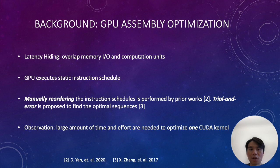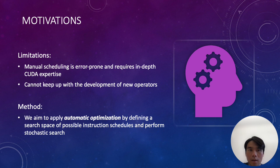We observed that large amounts of time and effort are needed to optimize a specific CUDA kernel's instruction schedule. The limitations of trial and error are that manual scheduling is a time-consuming and error-prone process, even with in-depth CUDA expertise. This is because we have to identify the critical instructions from thousands of lines and find the optimizable pattern. Moreover, if there is a change of data input such as the tensor shape, or kernel parameter such as tile size, the manual scheduling has to be redone. Also, it cannot keep up with the development of newer operators.